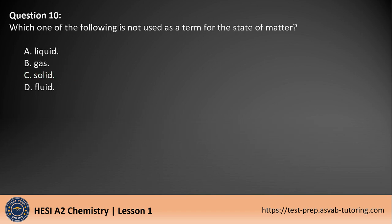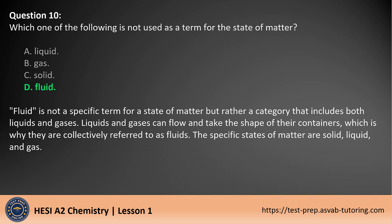Question 10. Which one of the following is not used as a term for the state of matter? A. Liquid. B. Gas. C. Solid. D. Fluid. The answer is D. Fluid is not a specific term for a state of matter, but rather a category that includes both liquids and gases. Liquids and gases can flow and take the shape of their containers, which is why they are collectively referred to as fluids. The specific states of matter are solid, liquid, and gas.